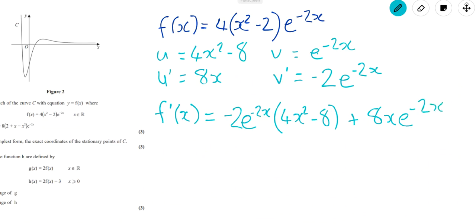And plus, and then the other two multiplied together, the 8x multiplied by the e to the minus 2x. And we're trying to get it into a certain form. We're trying to get it in the way that they want. So maybe we'll start by multiplying this out.